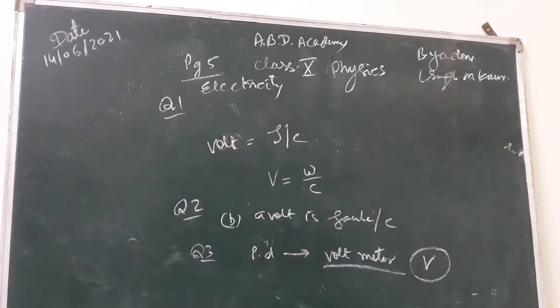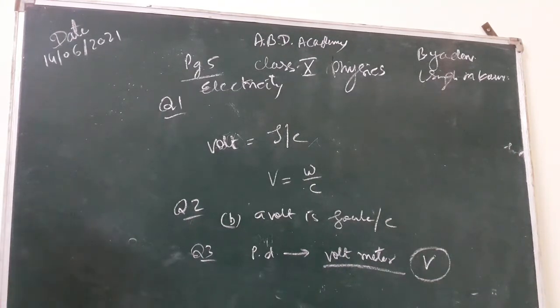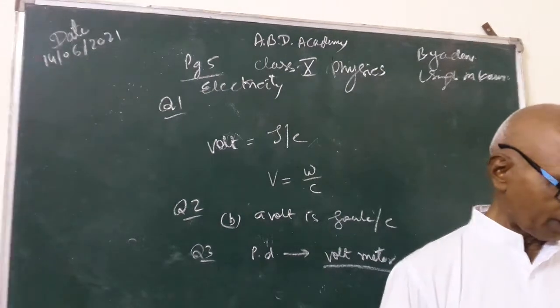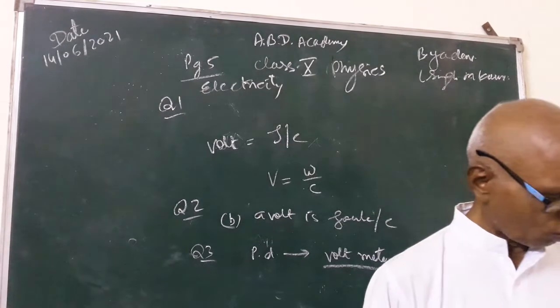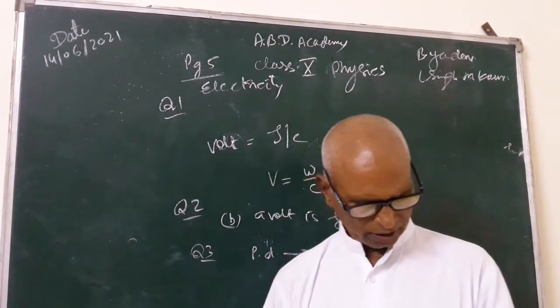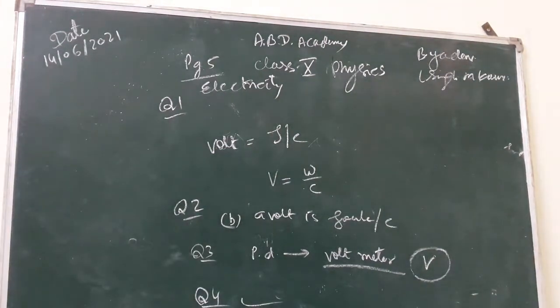Question 4 what is meant by saying that electric potential at a point is 1 volt. The electric potential at a point is 1 volt means work of 1 joule is done in bringing unit positive charge means one coulomb charge from infinity to that point in electric field. Question 4 answered.